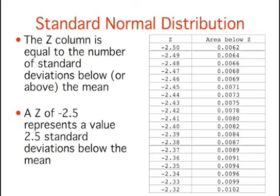For example, a z of negative 2.5 represents a value 2.5 standard deviations below the mean. The area below z is 0.0062. This means that 0.0062 of the distribution is below negative 2.5.